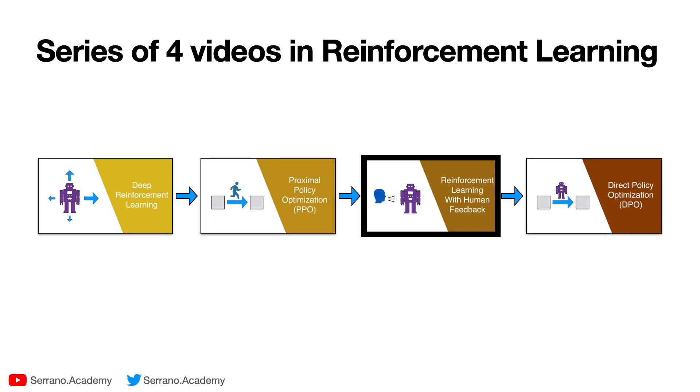And that's all, folks. That concludes the third video in our series of four videos on reinforcement learning. This is reinforcement learning with human feedback. The next one is going to be direct policy optimization, or DPO. So I hope you enjoyed the video.